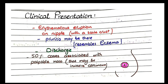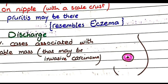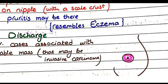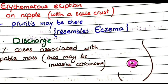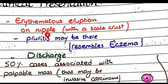Paget's disease of nipple clinically presents as an erythematous eruption on the nipple with a scaly crust. You can see the nipple is erythematous or red colored. Sometimes there is a scaly crust on the nipple, and often it is associated with pruritus — pruritus means itching.